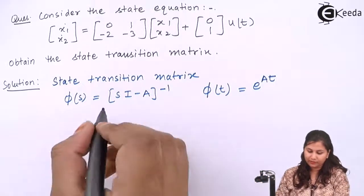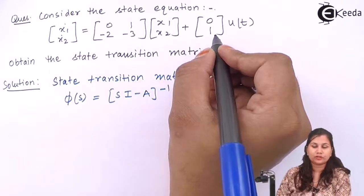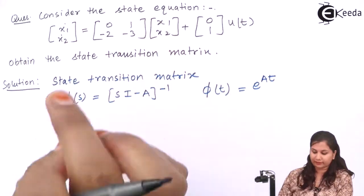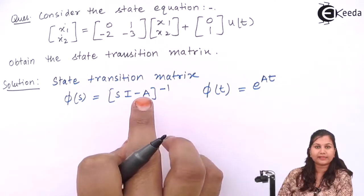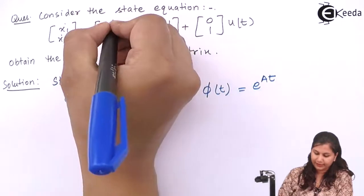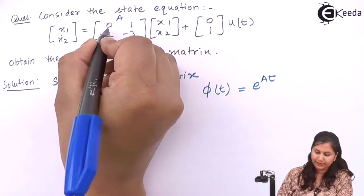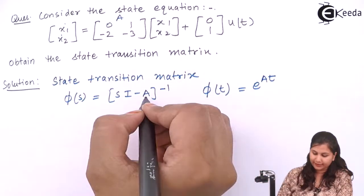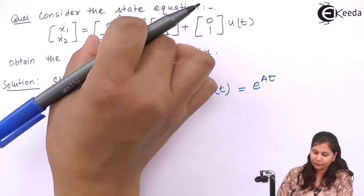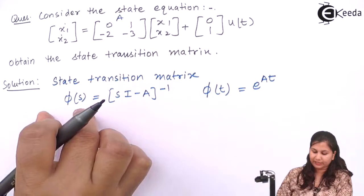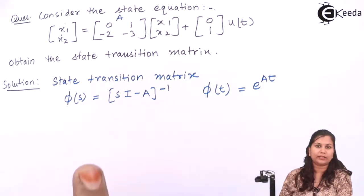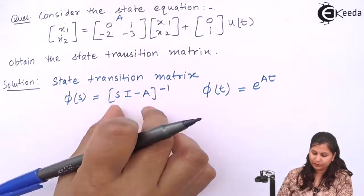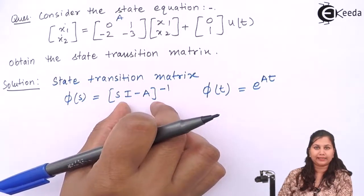From the given state equation, we know that the value of matrix A is [0, 1; -2, -3]. Putting the value of A into this formula, we can easily calculate the state transition matrix. Let us first calculate sI - A.